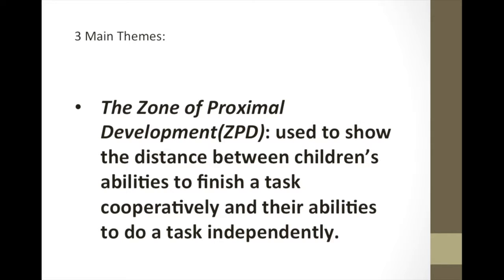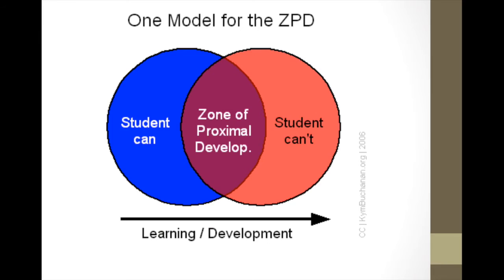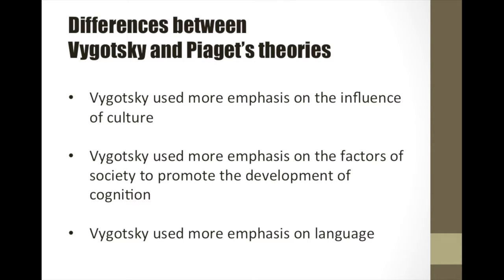The last theme is the zone of proximal development. It is used to show the distance between children's abilities to finish a task cooperatively and their abilities to do a task independently. This is an important concept that relates to the differences between what a child can achieve independently and what a child can achieve with encouragement from a skilled person. This chart directly shows what the meaning of zone of proximal development is.